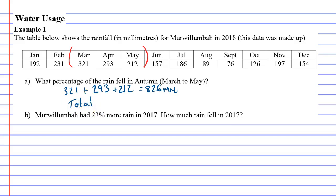321 plus 293 plus 212 comes out to 826 millimeters that fell in autumn. Now for any percentage question, you also need the total. We add all monthly values: 192 plus 231 plus 321 plus 293 plus 212 plus 157 plus 186 plus 89 plus 76 plus 126 plus 197 plus 154, giving a total of 2234 millimeters for the whole year.